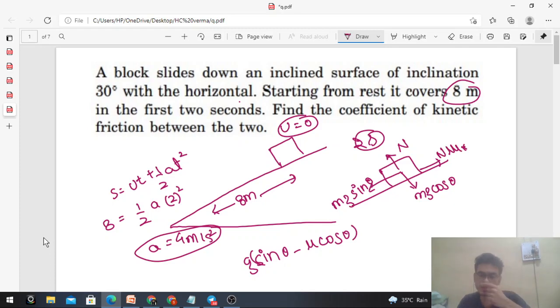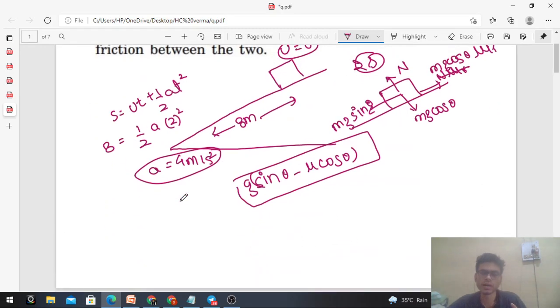That will be mg sin theta minus mu_k mg cos theta. And when you divide it by m, this will be the acceleration.